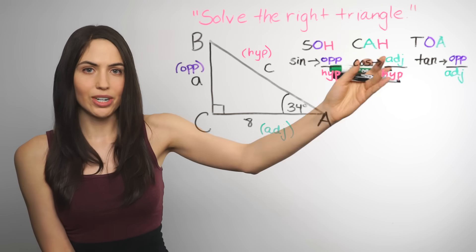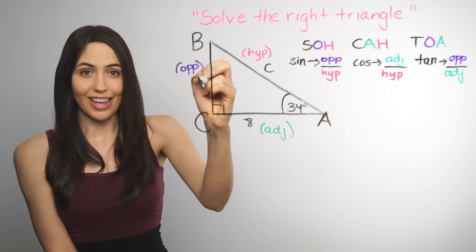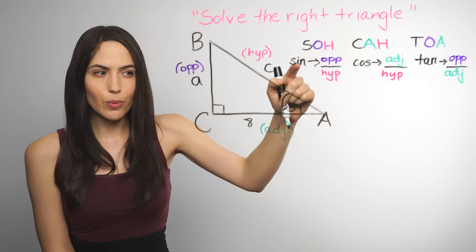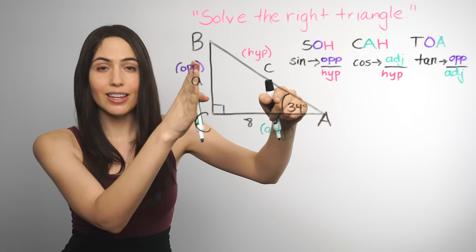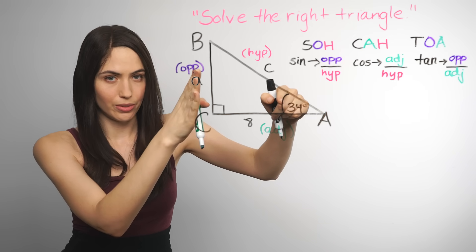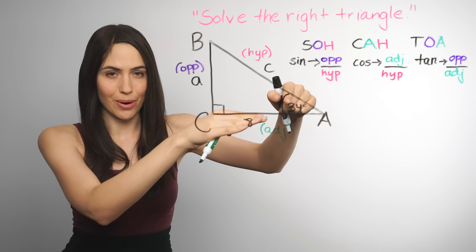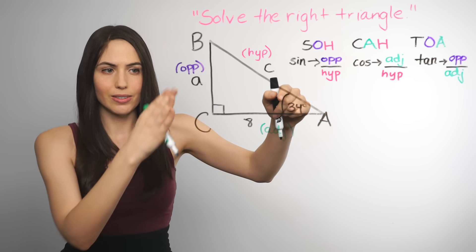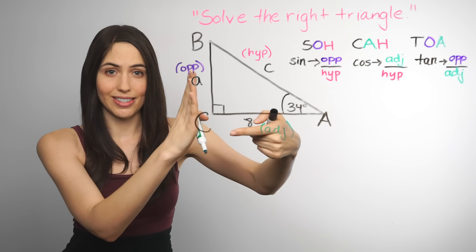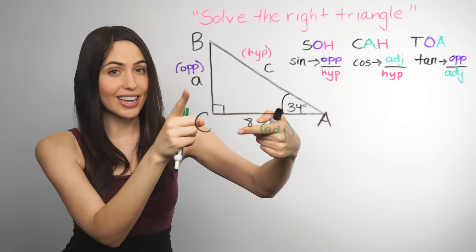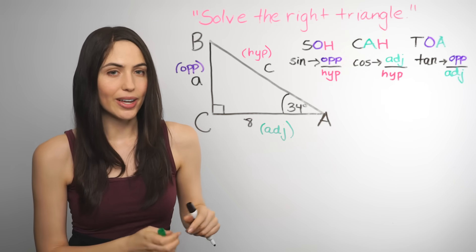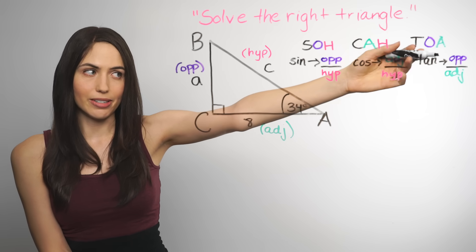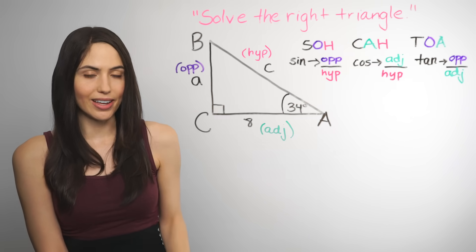So how do you know which of those three to pick? Say that we want to find side A. Here's the rule of thumb: pick the trig function that includes both the side you're looking for and the side you already know. We're looking for A, which is opposite, and we have 8, which is adjacent. Opposite and adjacent — that's tangent. Tan is opposite over adjacent, the TOA in SOHCAHTOA.